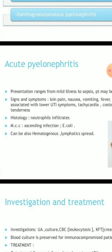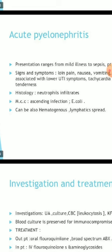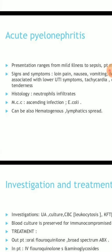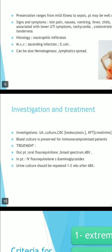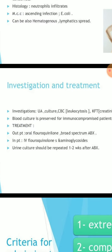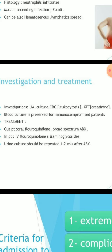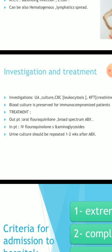Histology shows neutrophil infiltrates. Most common causative organism is E. coli. Infection can be hematogenous, lymphatic, or ascending. Investigations include urine culture, CBC showing leukocytosis, kidney function tests (KFT/creatinine), and blood culture in immunocompromised patients.